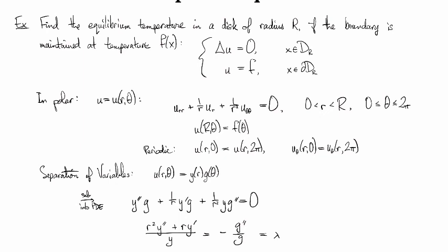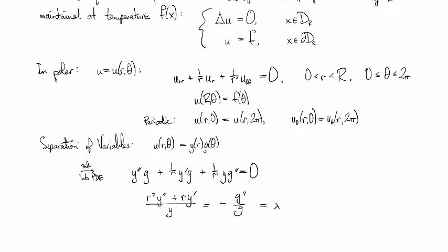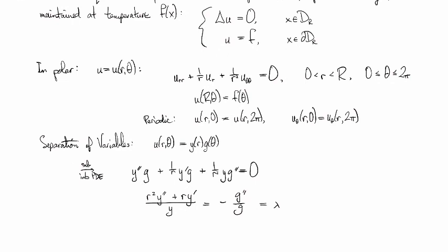There's our separation constant lambda. This breaks apart into two equations. For y: r²y'' plus ry' equals λy. For g: g'' equals negative λg.